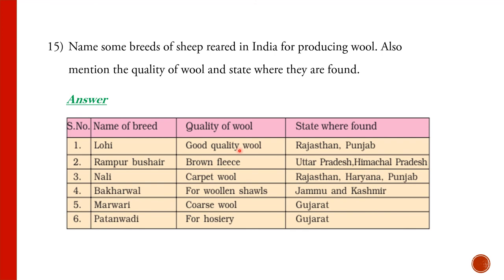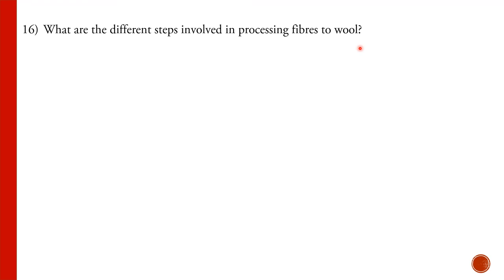Breeds of sheep reared in India: Lohi produces good quality wool and is found in Rajasthan and Punjab. Rampur Bushair has brown fleece and is found in Uttar Pradesh and Himachal Pradesh. Nali is used for carpet wool, found in Rajasthan, Haryana, and Punjab. Bakharwal is used for wool and shawls in Jammu and Kashmir. Marwari produces coarse wool in Gujarat. Patanwadi is used for hosiery and is found in Gujarat.